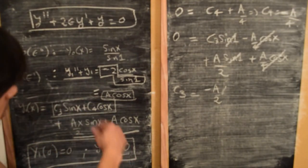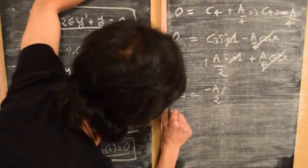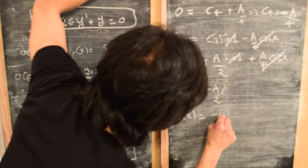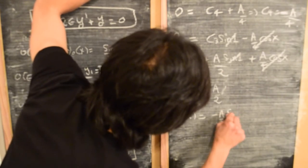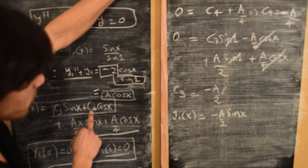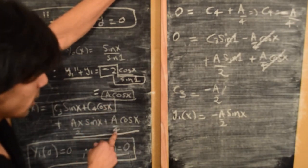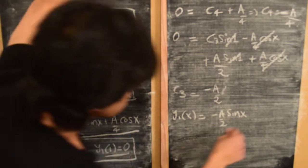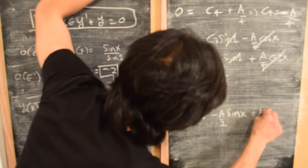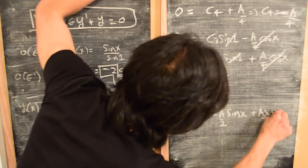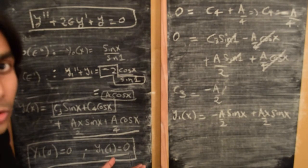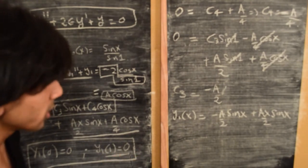Writing out the full solution for y_1, we find y_1(x) = −(A/2)·sin(x) + (A·x/2)·sin(x). The c_4 cosine terms cancel out, so we don't need to include those factors. This is our complete first-order solution y_1.